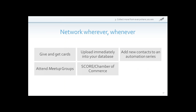Think about all the different places you network both online and offline — Meetup groups, your chambers — adding those contacts to an automation series is a really great thing to do once you've met someone. You've got their information, you've asked them if you can add them to a list, and you can actually set them up with an automated series of emails delivering value to them right from the beginning. Think about local events — speaking engagements or other types of events — have a way to collect those email addresses, whether through the iCapture tool, texting, a simple sign-up form, or those fishbowls set out at events.